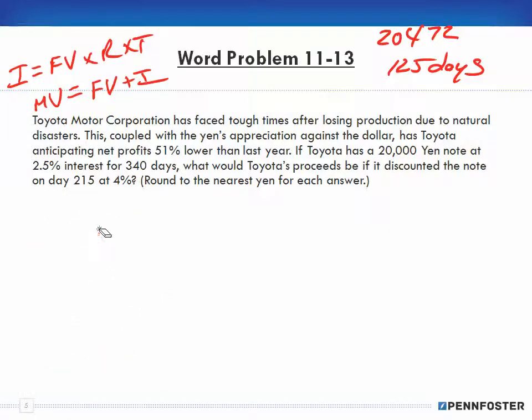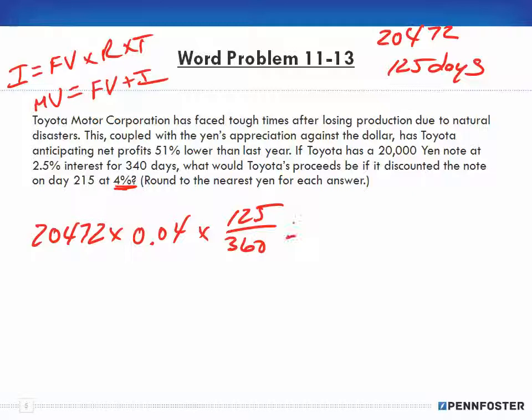In order to calculate the discount, we want to know what are the proceeds if it is discounted. We have to know how much it's being discounted, so we take our 20,472 and it's being discounted at 4%, that's 0.04, for the discount period of 125 days over 360.